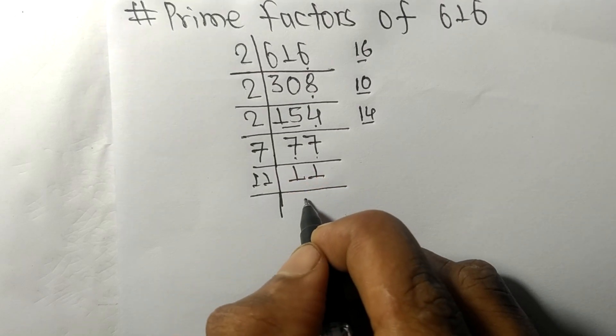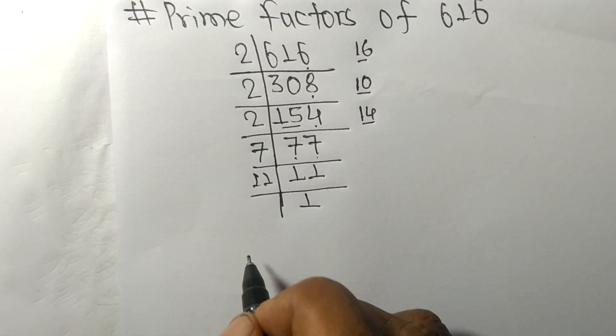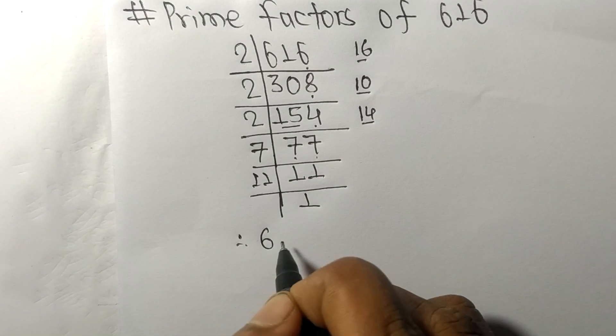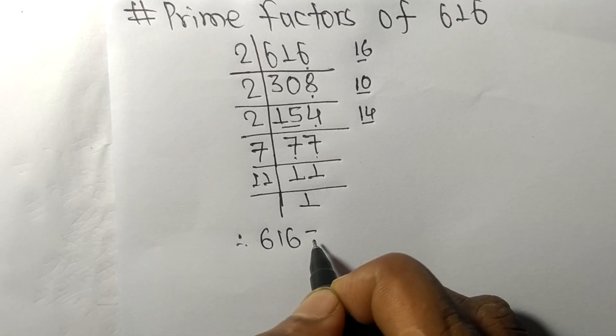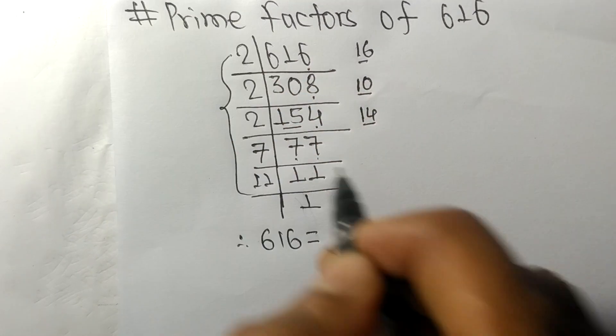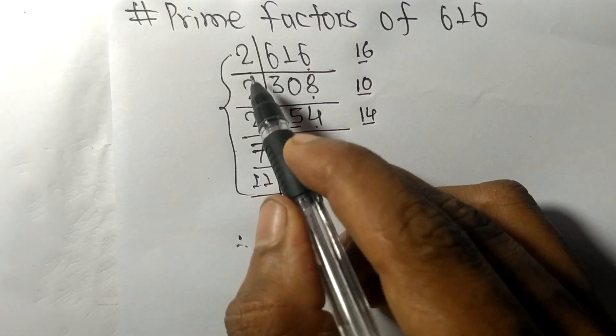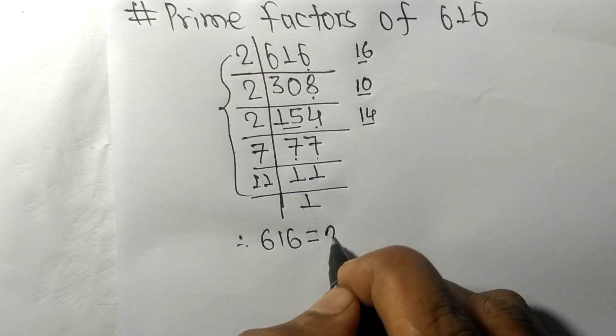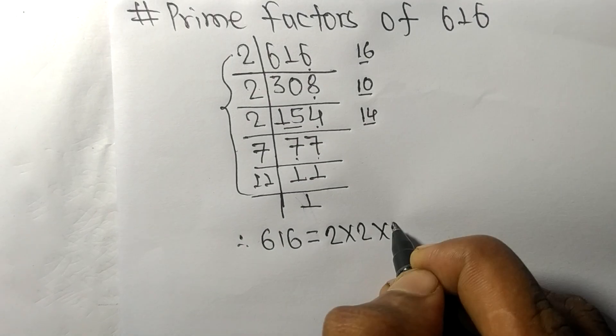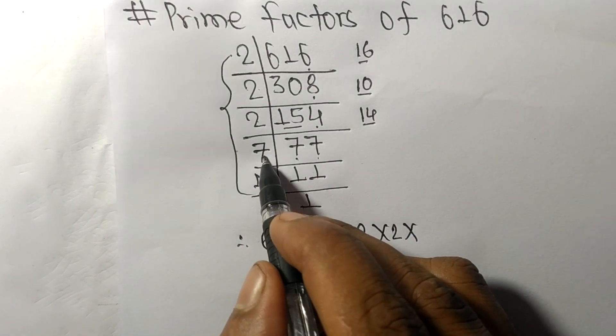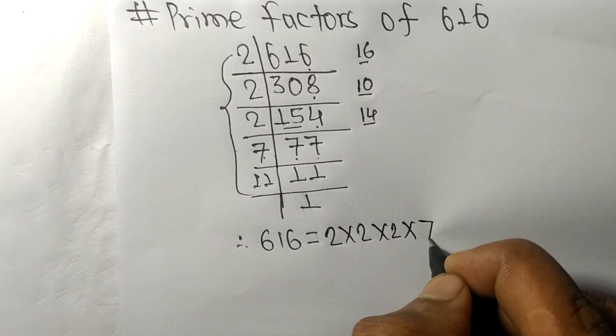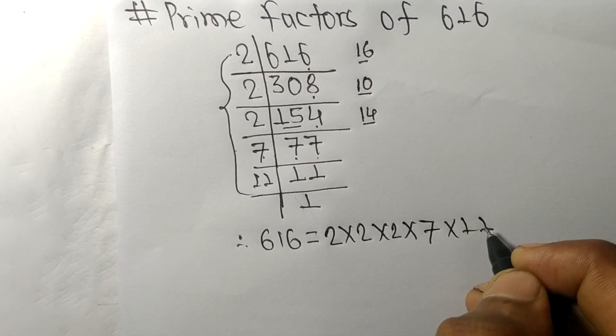Therefore, 616 is equal to, from this side, we have one, two, three times two, so two times two times two, and here seven and eleven. So seven times eleven.